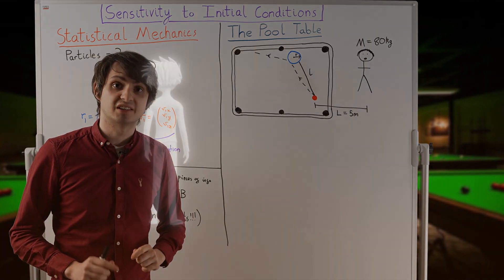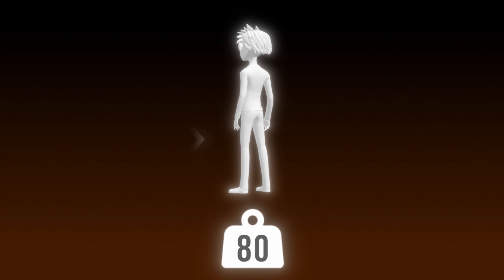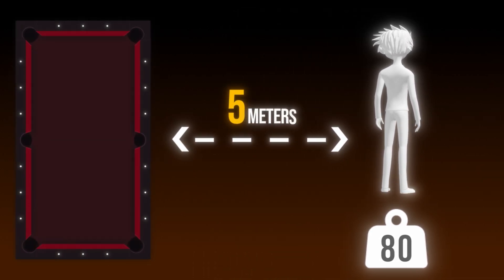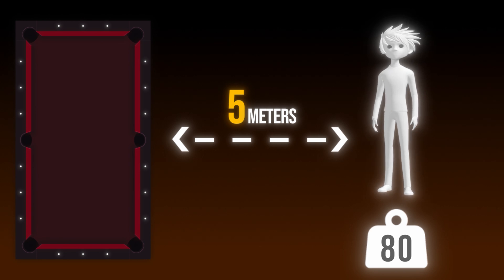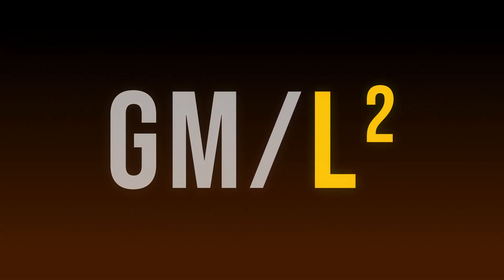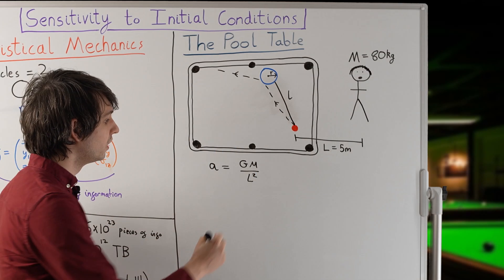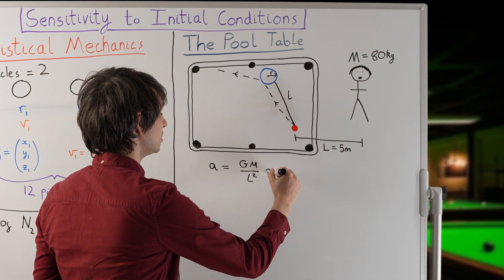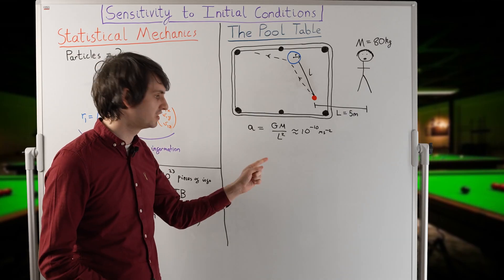Let's try calculating it anyway. If you weigh 80 kilograms and you're standing away from the pool table at a distance of 5 meters, then the pool balls on the table are going to accelerate towards you with an acceleration given by g times m over l squared, where g is the gravitational constant, m is your mass, and l is your distance from the table. Since g is so small, this ends up being around 10 to the minus 10 meters per second squared. That's pretty tiny.